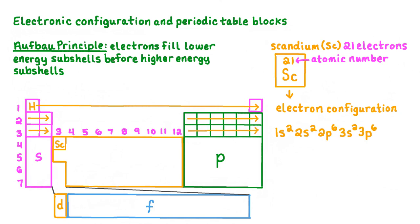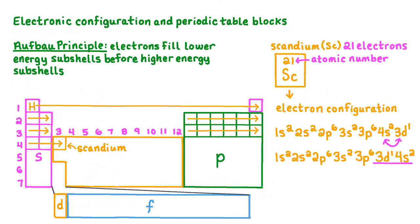Moving across period 3, we fill the 3s subshell with 2 electrons and the 3p subshell with 6 electrons. Finally, moving across period 4, we fill the 4s subshell with 2 electrons and the 3d subshell with 1 electron. When we write the electronic configuration using the periodic table, the value used for the subshell label generally matches the period number. However, when filling D subshells, the value used is always 1 less than the period number.